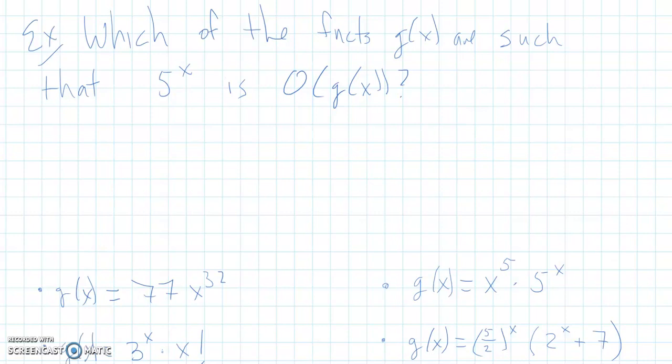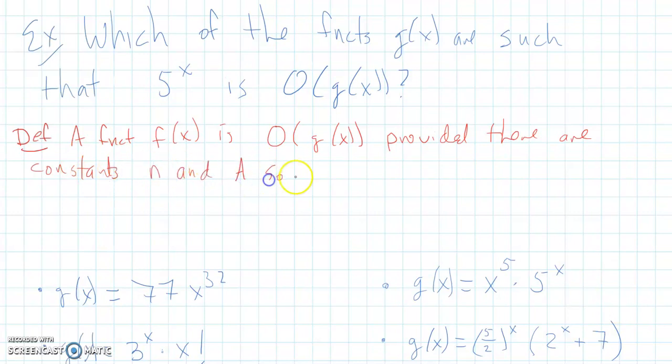First of all, let's recall what it means for something to be big O. So this is the definition. A function f of x is big O of another function g of x, provided there are constants n and a, so that if x is greater than or equal to n, we have that the absolute value of f of x is less than or equal to a times the absolute value of g of x.